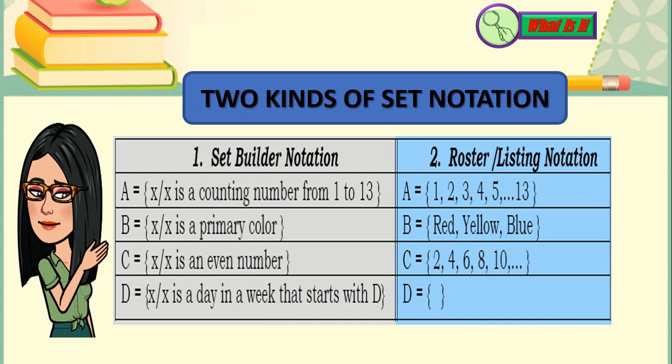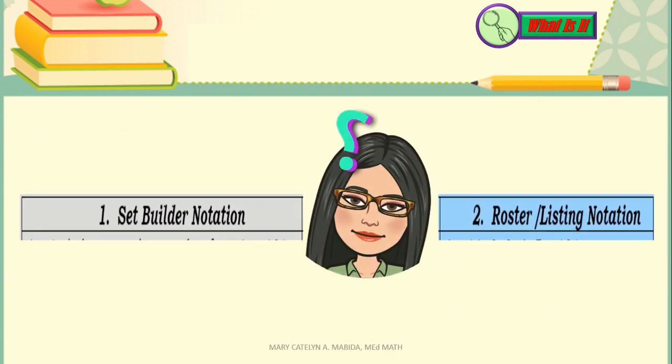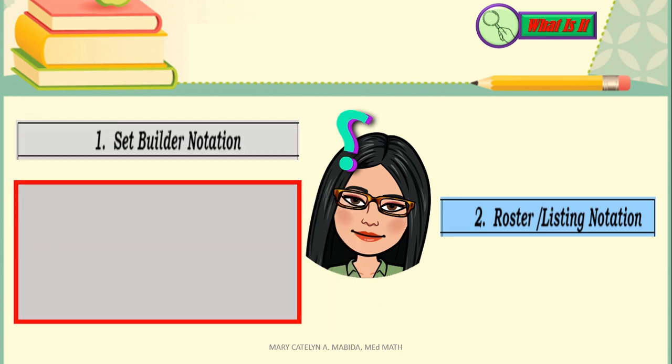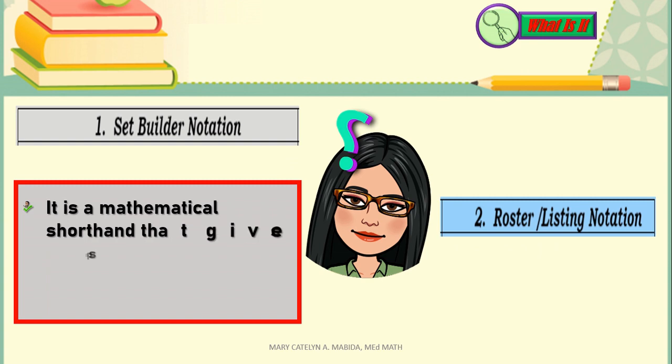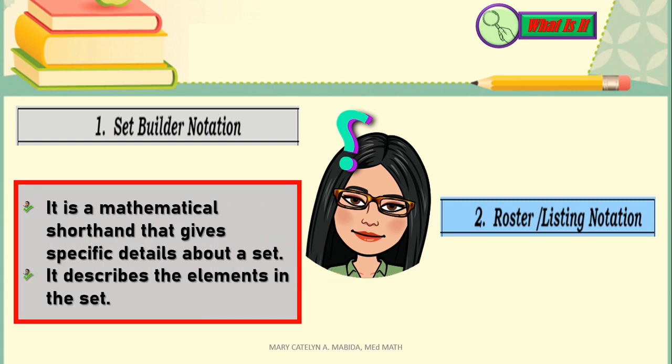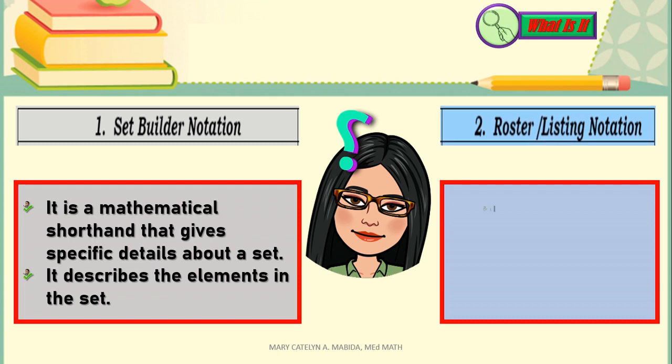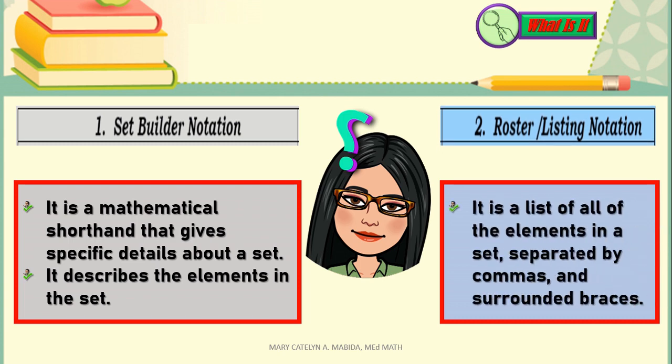Let's take a look at these notations and observe them. Again, you can pause and replay this video as needed. Here we go. Set Builder Notation is a mathematical shorthand that gives specific details about a set. It describes the elements in the set. Roster Listing Notation is a list of all the elements in a set, separated by commas and surrounded by braces. There you have it. So you can replay the part of the video where we gave the examples for Set Builder Notation and Roster Listing Notation.